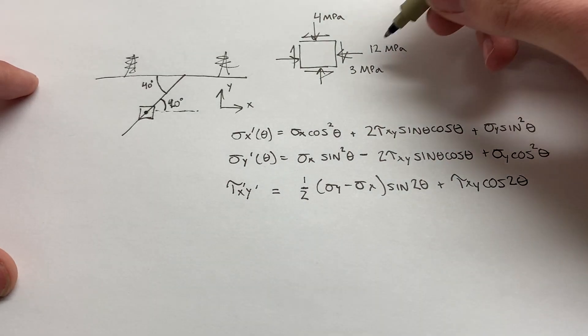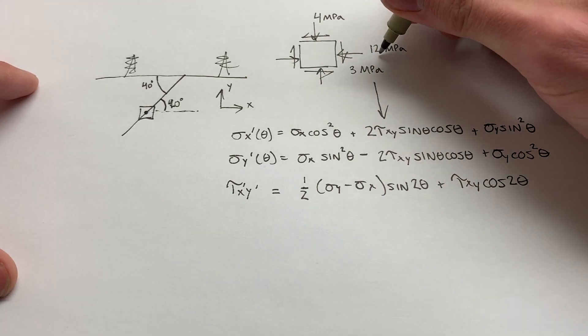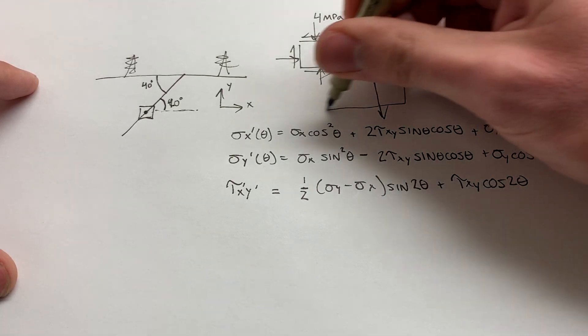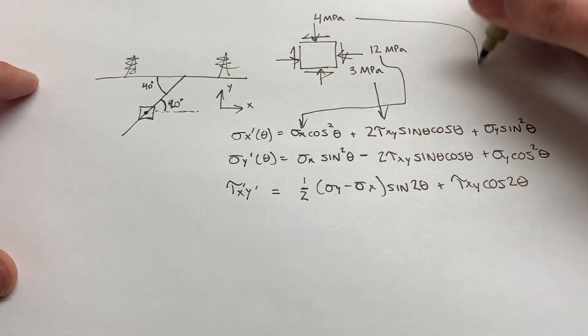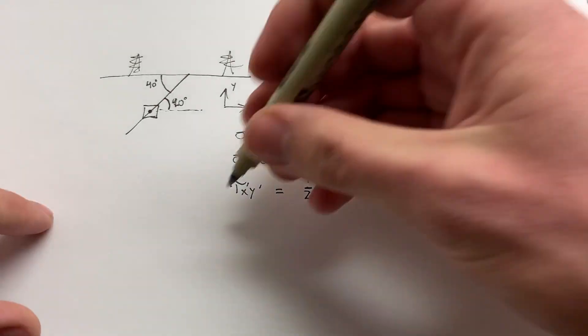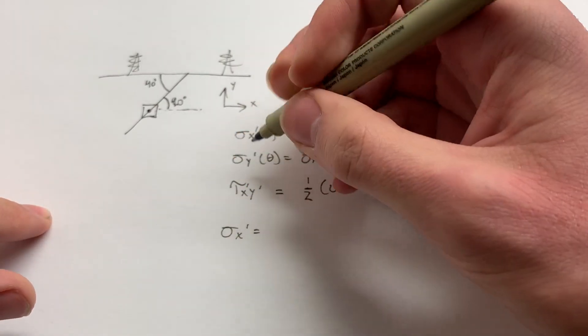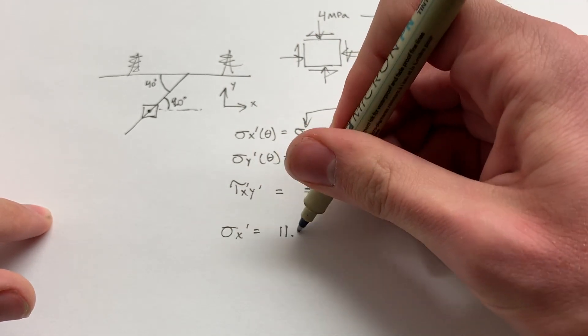So you could go in and plug these values in. The 3 megapascals is going to be your tau, the 12 megapascals is going to be your sigma X, and the 4 is going to go to sigma Y. You can plug all of those in. You can do that on your own if you need this to be confirmed. But I calculated this out in advance. And the numbers that you end up with are sigma X prime is going to be 11.65.